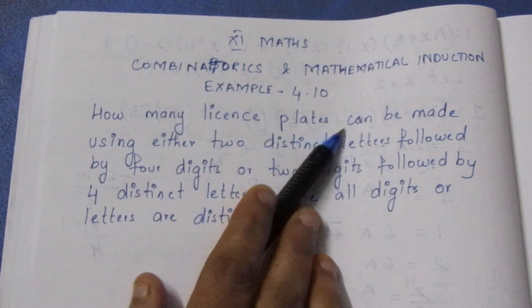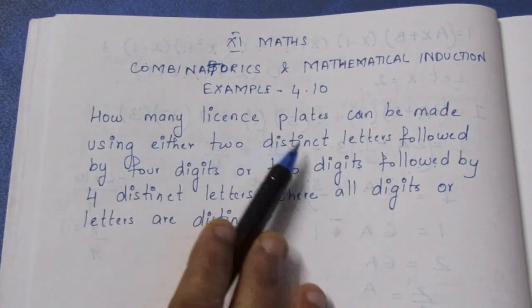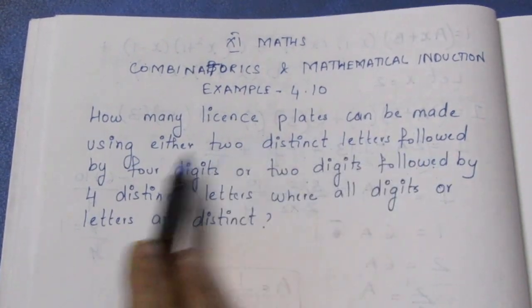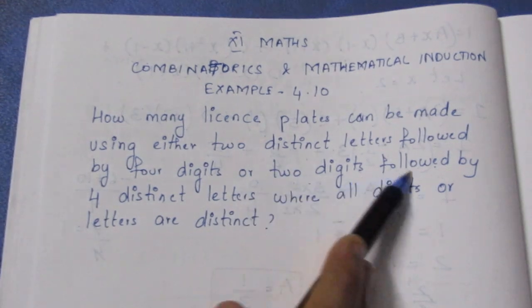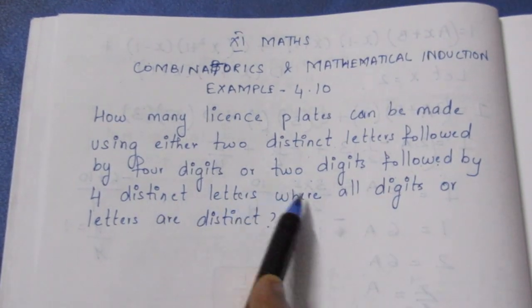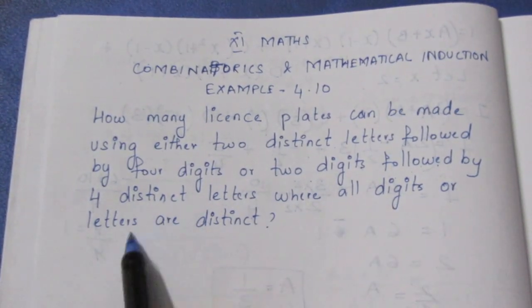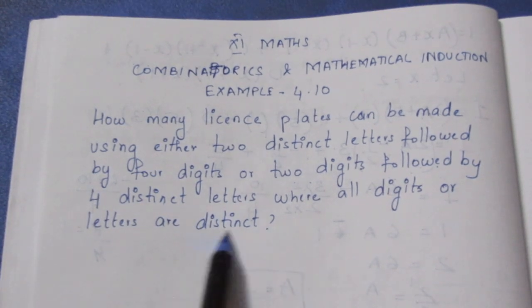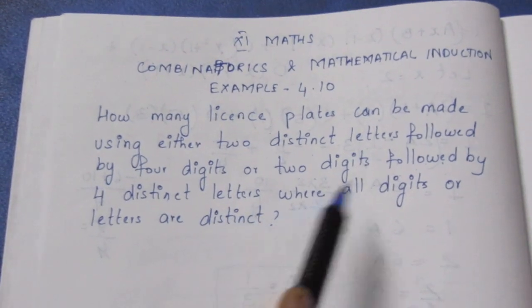How many license plates can be made using either 2 distinct letters followed by 4 digits or 2 digits followed by 4 distinct letters where all the digits or letters are distinct?